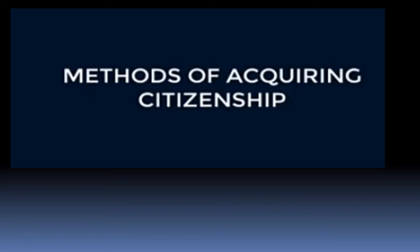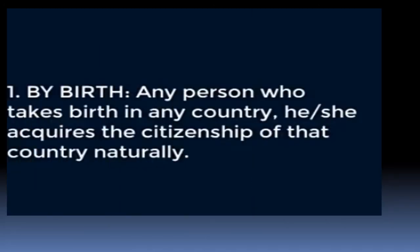Now let us see the methods of acquiring citizenship. How do you get citizenship? The first method is by birth. Any person who takes birth in any country acquires the citizenship of that country naturally. For example, if your parents are from another country but you are born in India, then automatically you will get the citizenship of India.